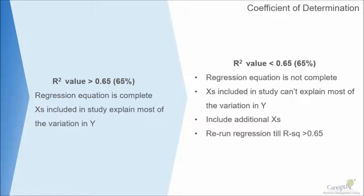If the R-square value is less than 65%, then I would say that the regression equation is not complete because we are able to explain some amount of variation which is happening in the Y.